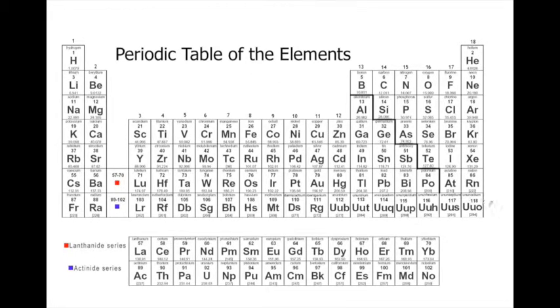Currently there are 118 known elements in the universe and what the periodic table does is it takes all of those elements and puts them together in a very organized manner. So what we'd like to do is look at some of the basic way that these elements are organized and some of the terms that go along with the periodic table.